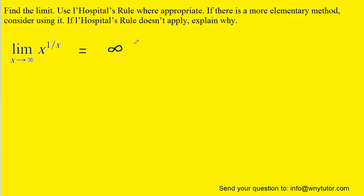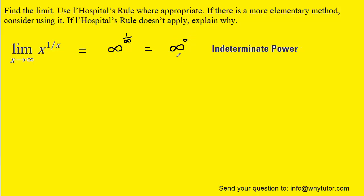So we would have infinity raised to the power of 1 over infinity. Now, 1 divided by infinity is essentially 0, so this limit becomes infinity raised to the power of 0. Unfortunately, infinity raised to the power of 0 is known as an indeterminate power, and so we're not able to yet evaluate it. We're going to have to perform another method.